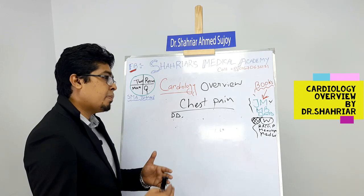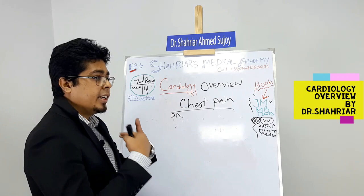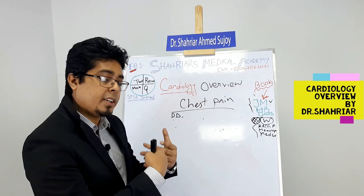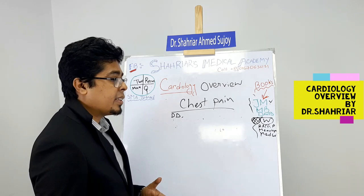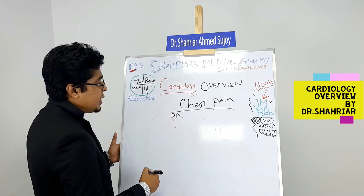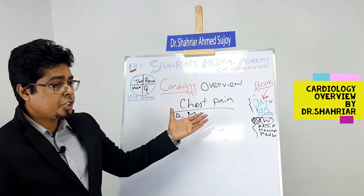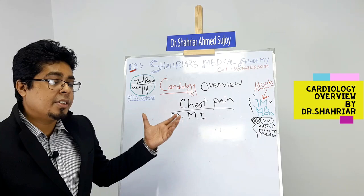Near the heart is the pericardium, so always remember pericarditis as a differential. The esophagus and lungs are also nearby, contributing esophageal and pulmonary causes. So always start with the differential diagnosis for chest pain — cardiac, esophageal, pulmonary, and idiopathic causes are all included.